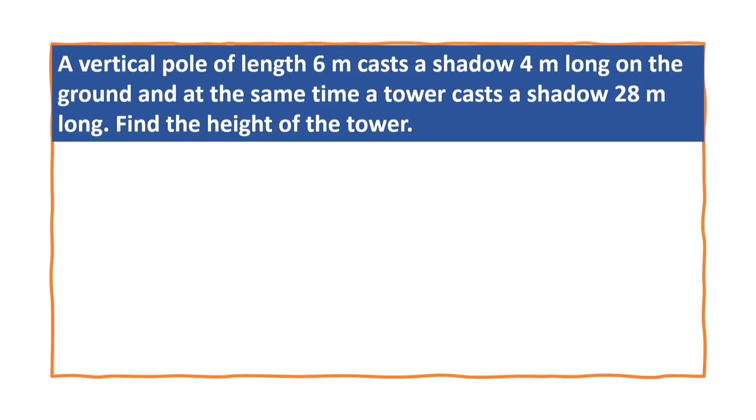A vertical pole of length 6m casts a shadow of 4m long on the ground, and at the same time a tower casts a shadow of 28m long. Find the height of the tower.